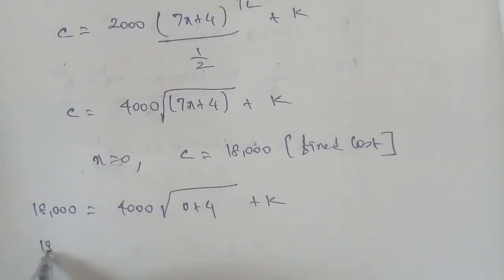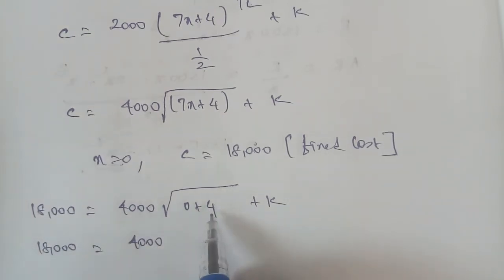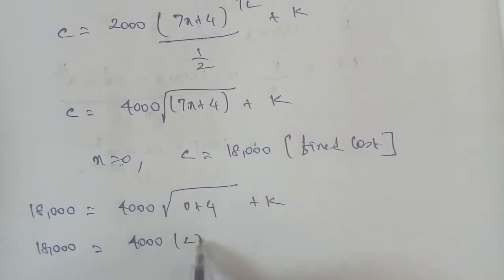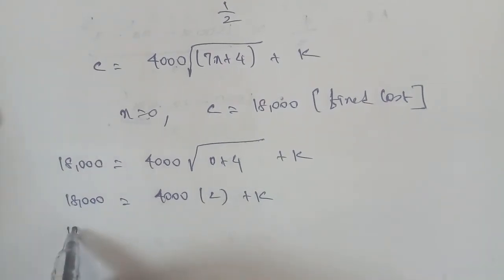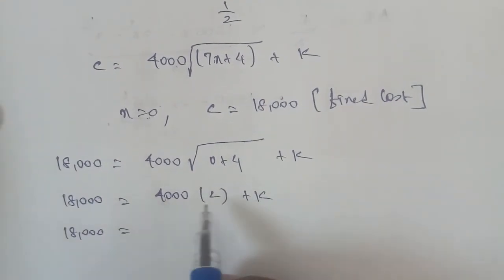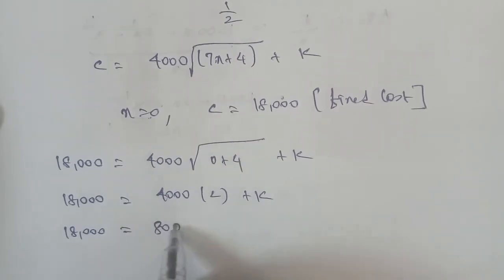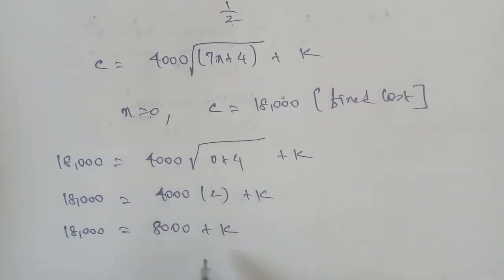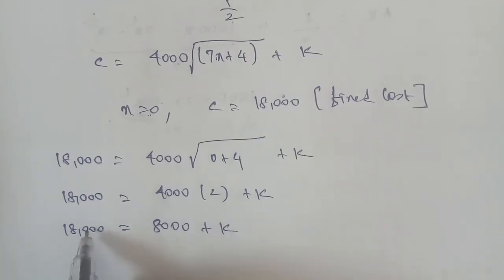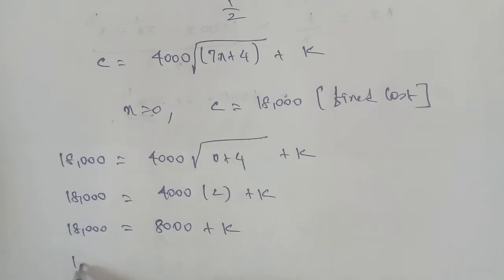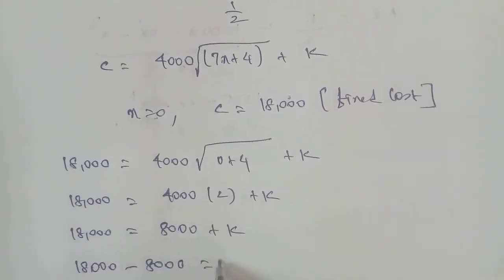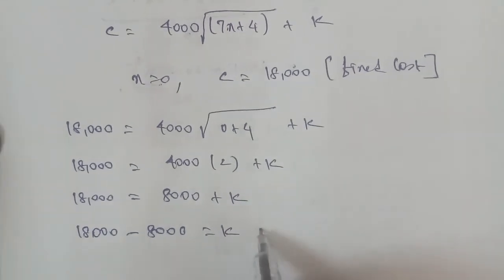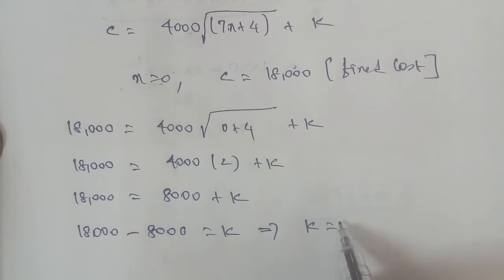Evaluating: 7 times 0 is 0, so 0 plus 4 is 4. Square root of 4 is 2. So 18,000 equals 4,000 times 2, plus k. That gives 18,000 equals 8,000 plus k. Therefore k equals 18,000 minus 8,000, which gives k is equal to 10,000.